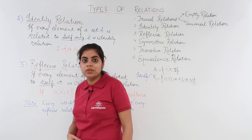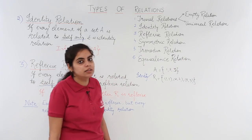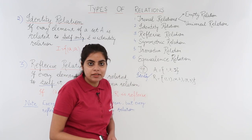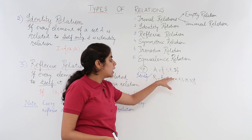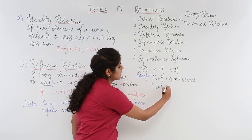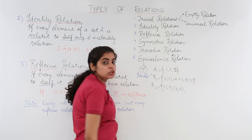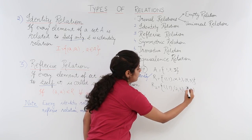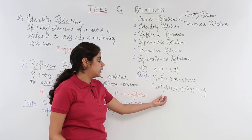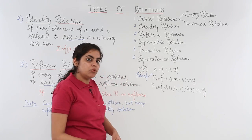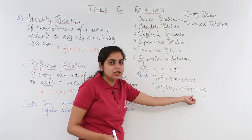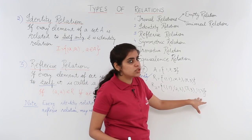Let's see reflexive relation with an example, using the same set as before. A = {1, 2, 3}. R2 is another relation defined as {(1,1), (2,2), (3,3), (1,3)}. Let's see what this relation tells us: 1 is related to 1, 2 is related to 2, 3 is related to 3 — and also, one extra thing: 1 is also related to 3.